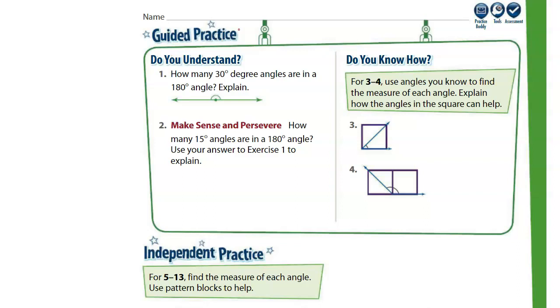Number one, how many 30 degree angles are in a 180 degree angle? Explain. Pause this video and think, how would you solve this problem? I'm going to give you a hint. We're either going to use addition, subtraction, division, or multiplication. How can we solve this problem? We're going to use division because we need to see how many 30 degrees make up a 180 degree angle.